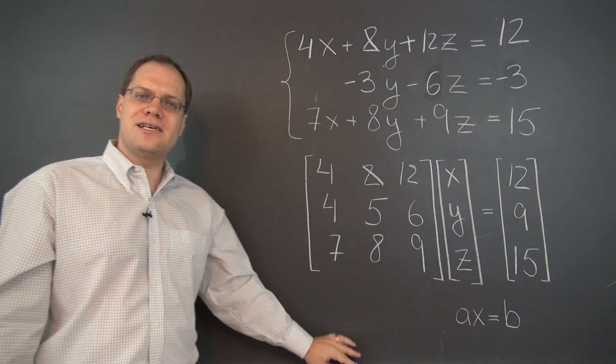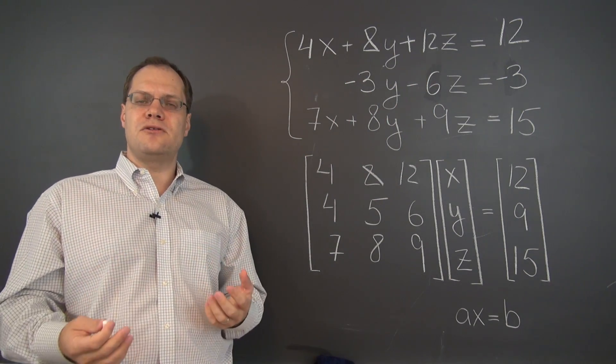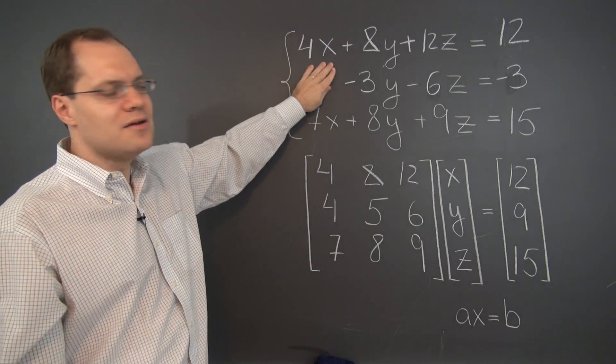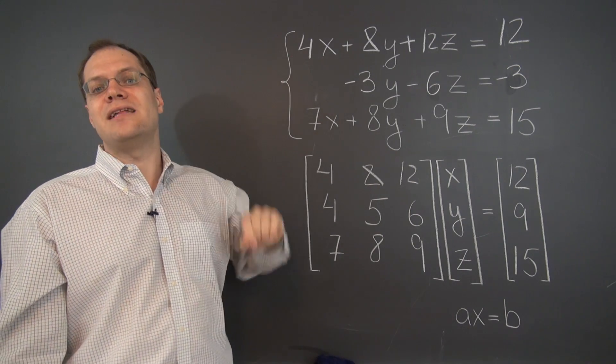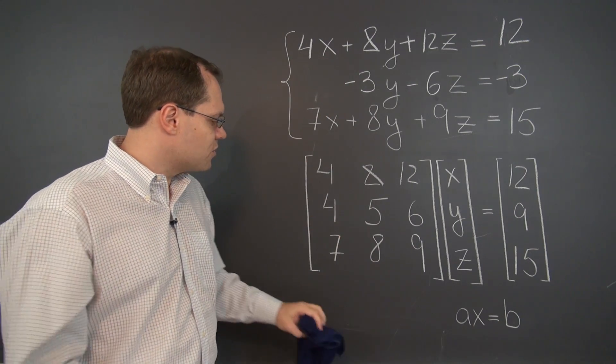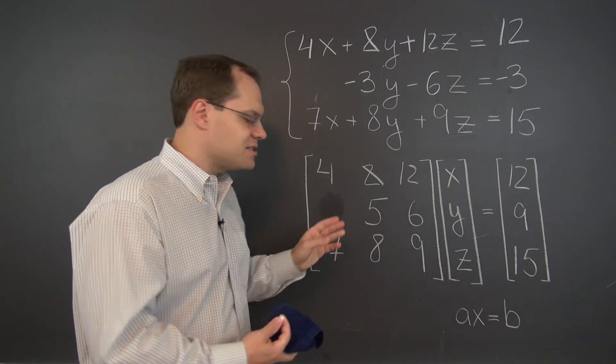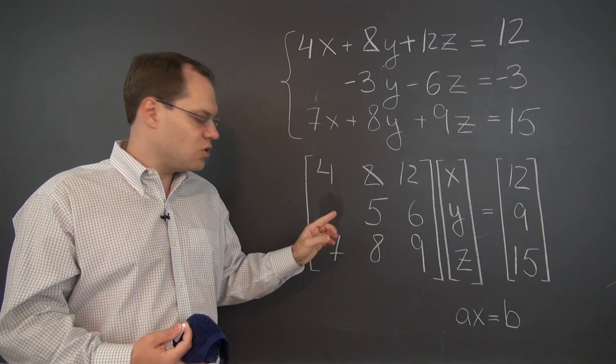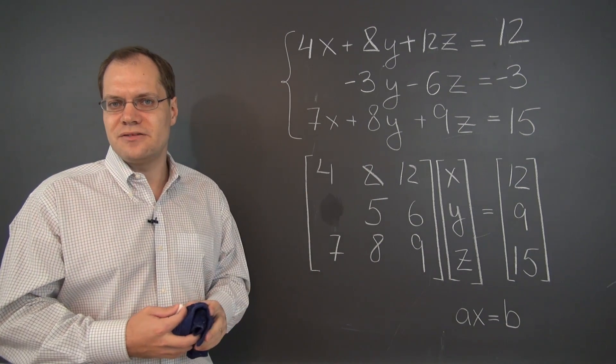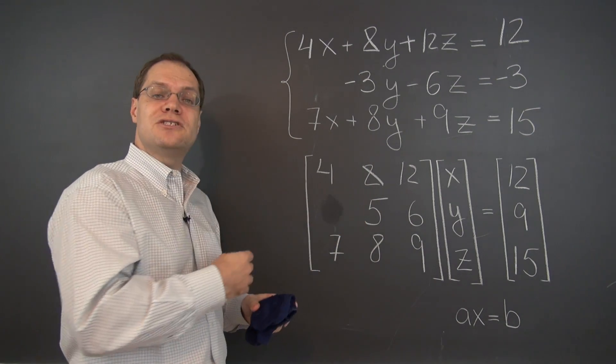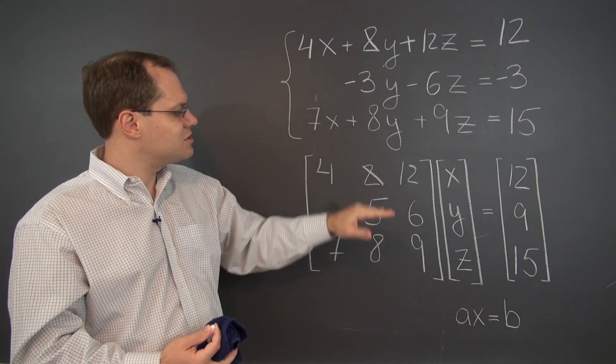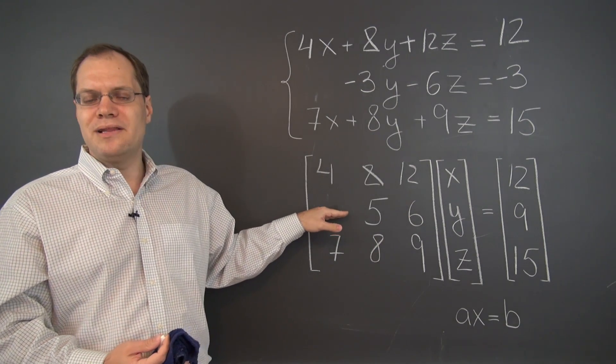So once again, we have a system that has the same set of solutions as the original system, but it's a little bit simpler. We have simplified it because this term is now missing. Let's now reflect the same change in the matrix form. This 4 is gone and it's actually customary to either write 0 or to leave the entry completely blank.